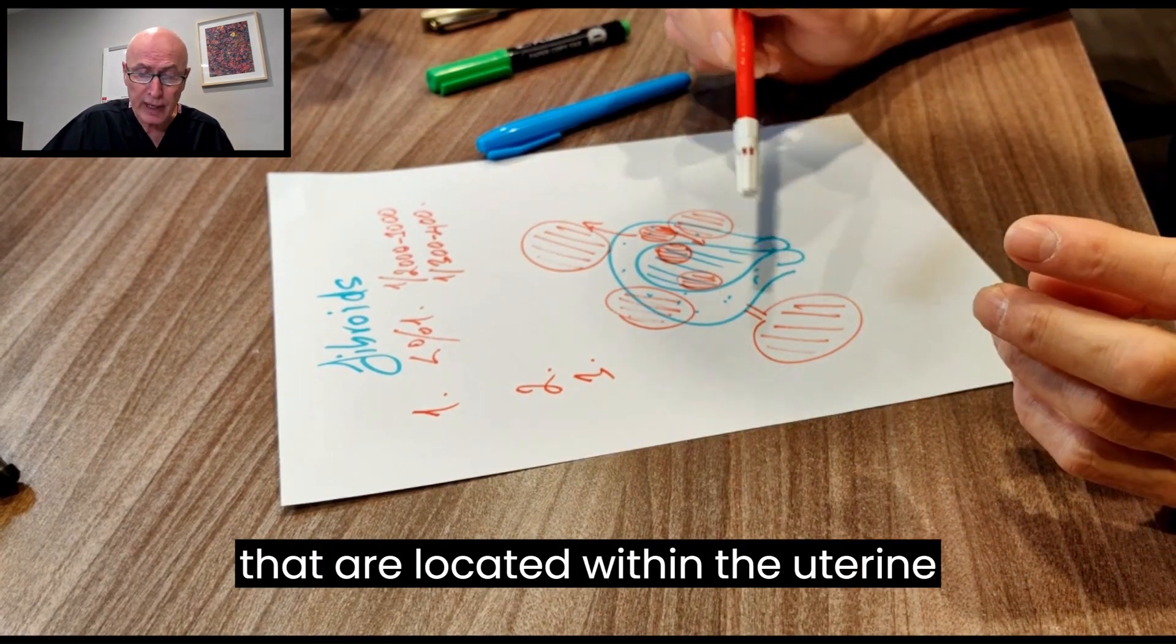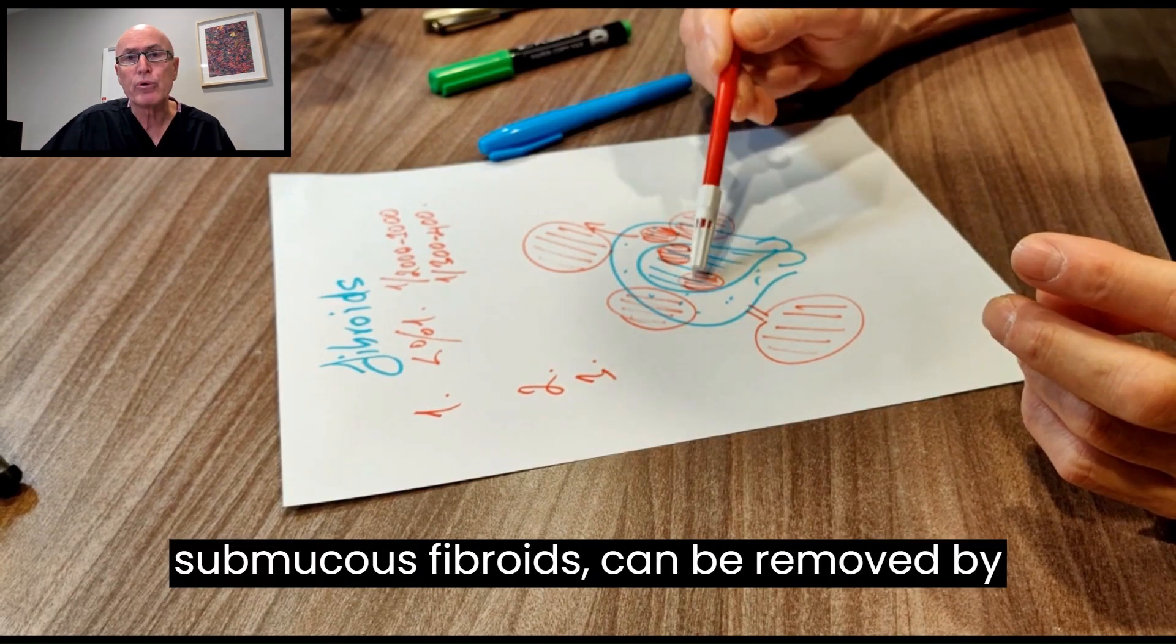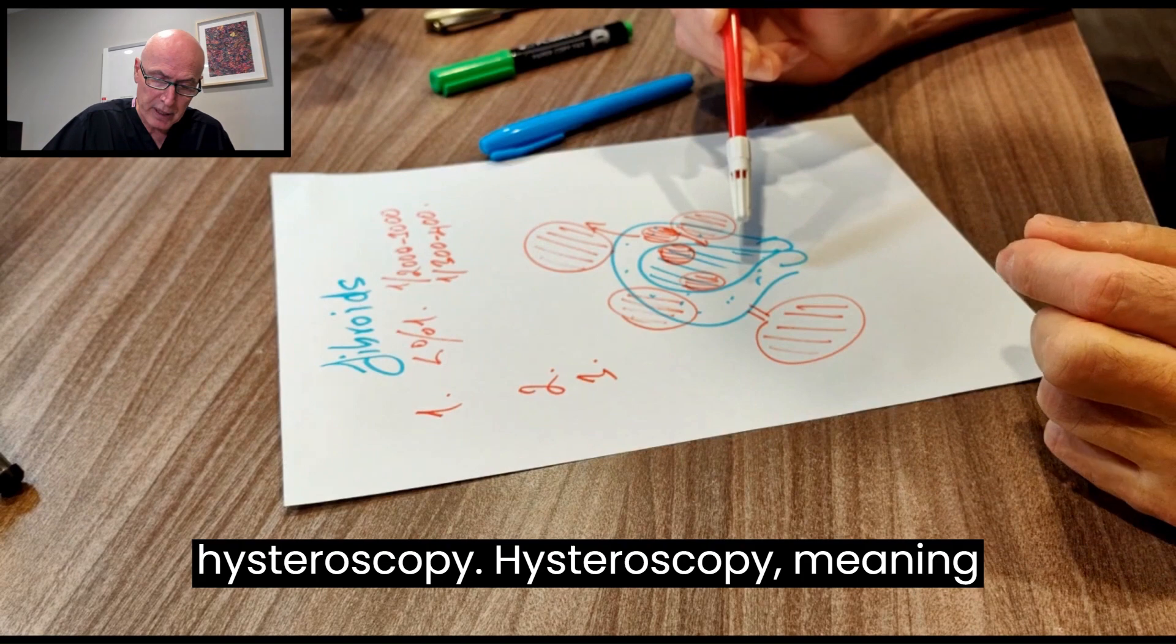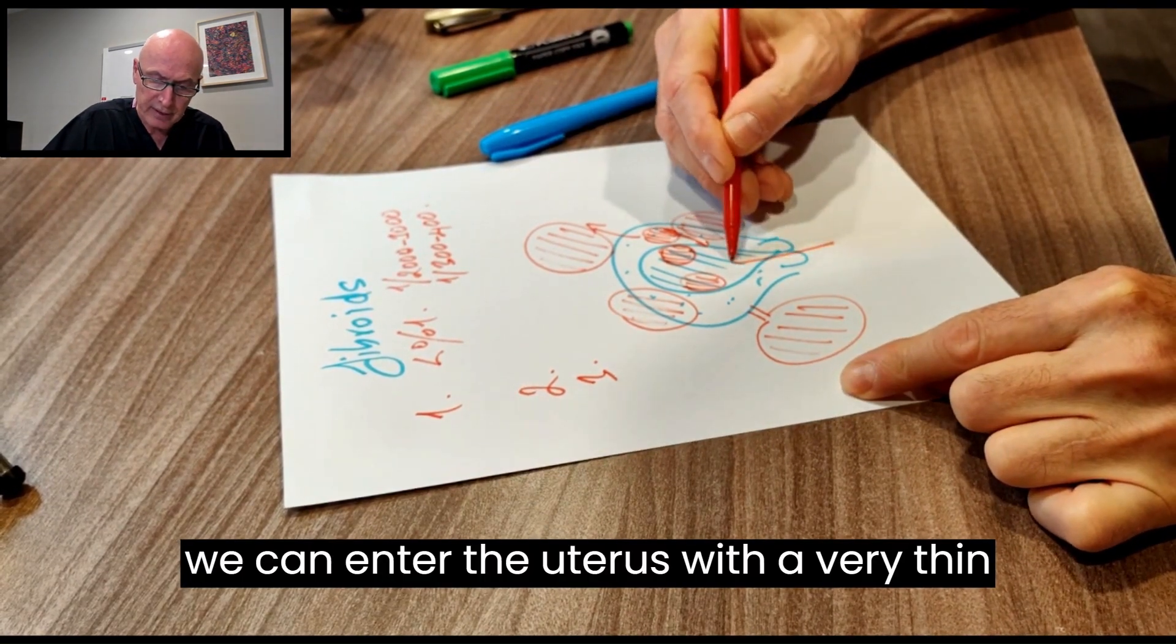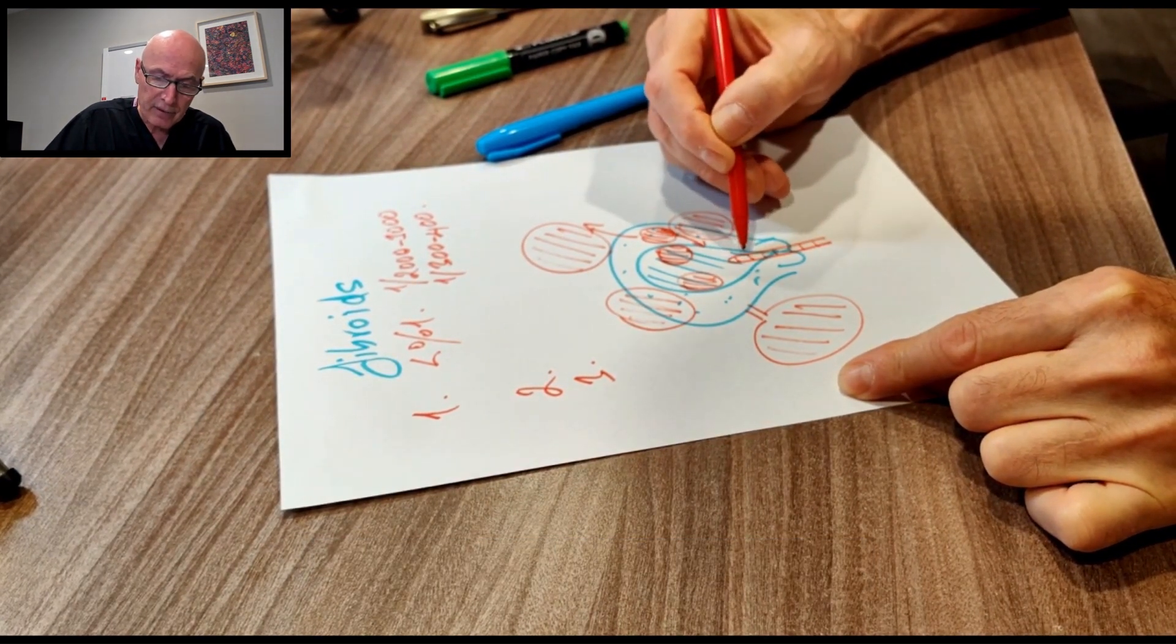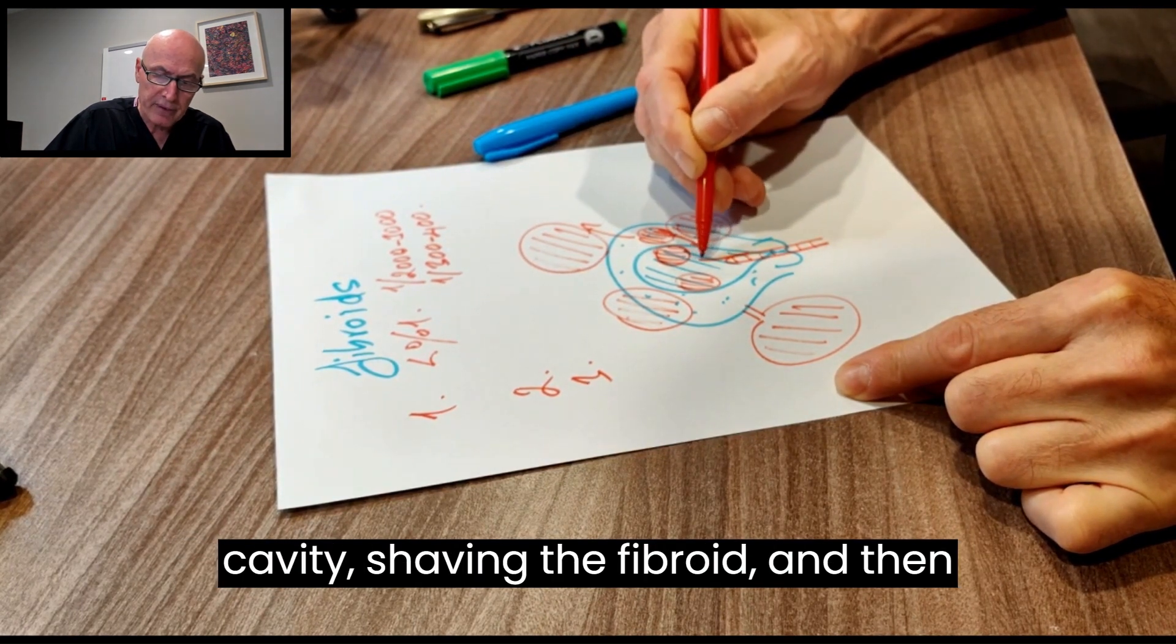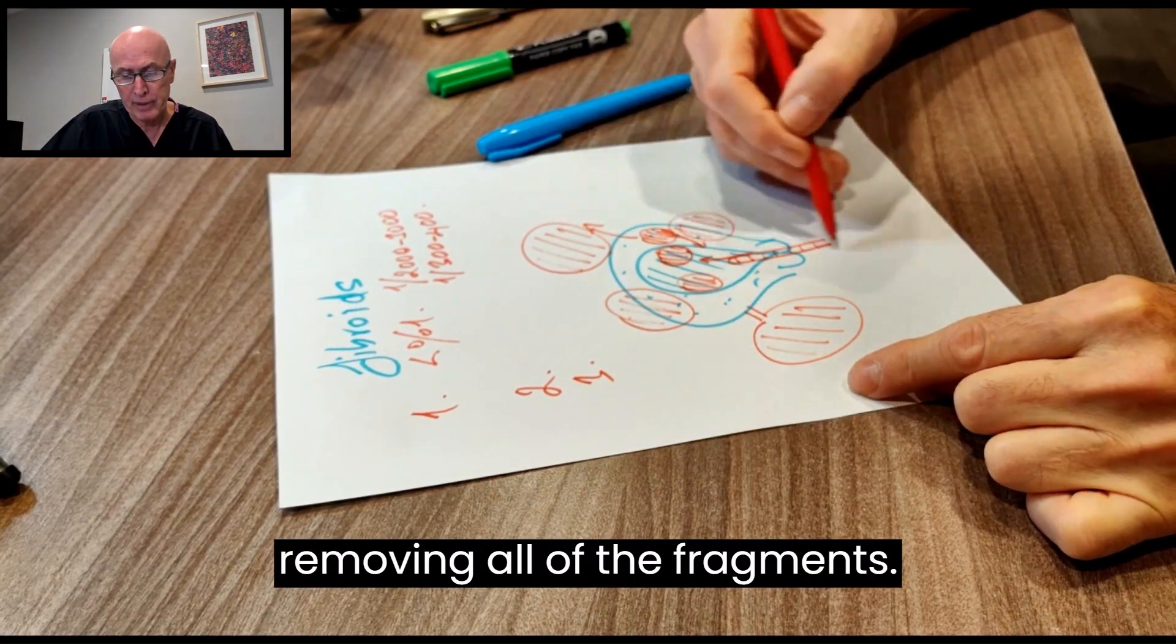Most fibroids can be removed by laparoscopy. The ones located within the uterine cavity, what we call submucous fibroids, can be removed by hysteroscopy. Hysteroscopy means we can enter the uterus with a very thin telescope, and then pass ancillary instruments from this telescope, entering the uterine cavity, shaving the fibroid, and removing all of the fragments.